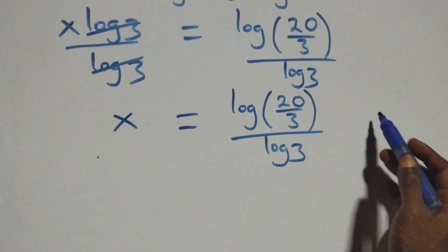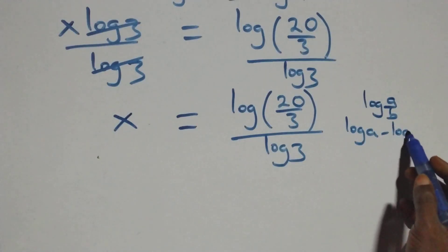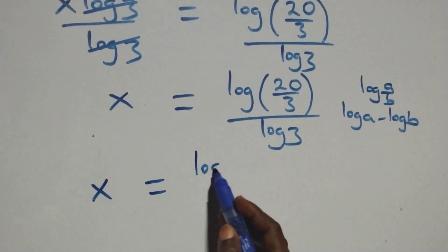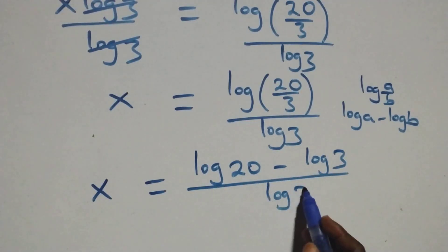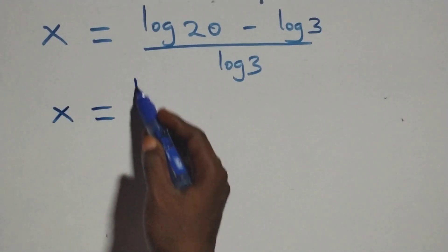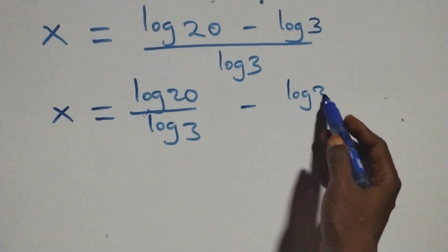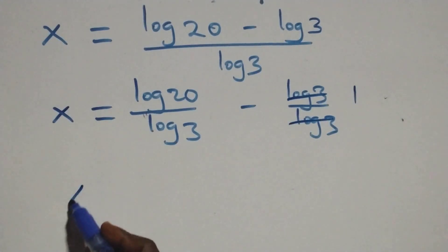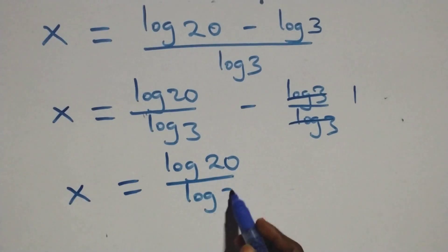This follows the quotient law of logs: log(a/b) is the same as log a minus log b. So x equals log 20 over log 3, minus log 3 over log 3. The log 3 over log 3 cancels to 1, which implies x equals log 20 over log 3, minus 1.